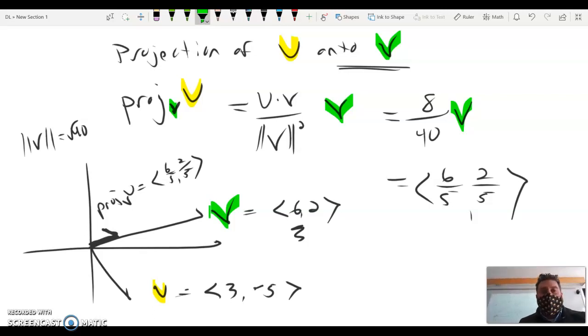We're essentially taking into account the force or the influence of u onto this vector v. And that is called a projection of u, in this case, onto v. And note how, again, it lands on v. Occasionally, we'll get projections that look like this when we have a negative scalar out here.